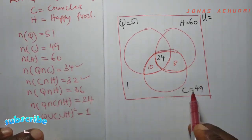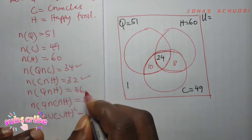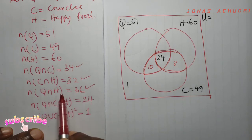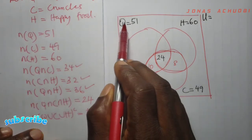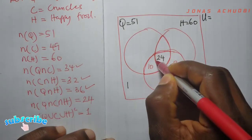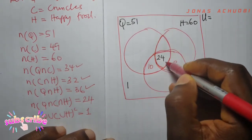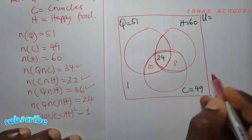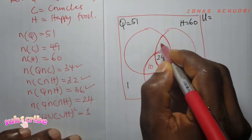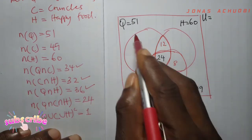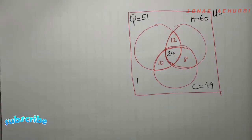We are also told that 36 persons liked high quality and happy food. High quality and happy food intersect in their shared region. Out of the 36 persons that liked high quality and happy food, 24 liked all three, so what we have left is 36 minus 24 = 12. Those 12 liked high quality and happy food only, and 12 plus 24 gives us 36 persons that liked high quality and happy food.